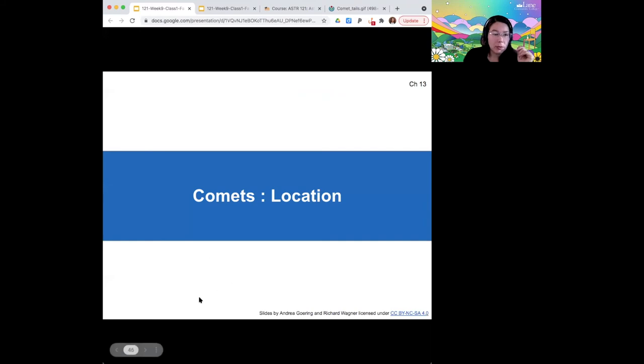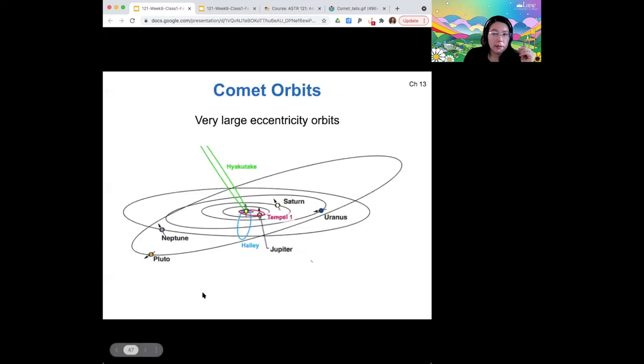So comets orbit in very large and high eccentricity orbits. So here's a couple of examples. The solar system orbits of the planets are shown here in the black lines. Pluto's is this tilted black line. And then comet Temple 1 is this pink orbit. Comet Halley, which you've probably heard before, is this blue orbit. And then comet Hayakutake is this green one.